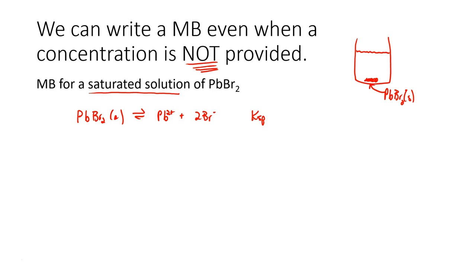Well, it dissociates ever so slightly into lead 2 ions and 2 bromide ions. You may recognize this as a Ksp. And maybe you didn't realize it at the time, but when you said, at equilibrium, I'm going to call lead X and bromide 2X, you sort of were writing a mass balance. By calling lead X and bromide 2X, you were saying that the concentration of bromide was twice the concentration of lead 2. This is the mass balance for this solution.